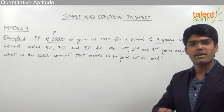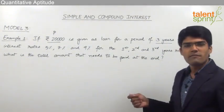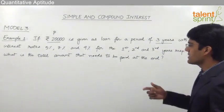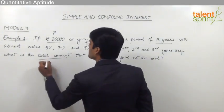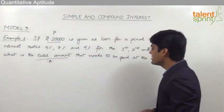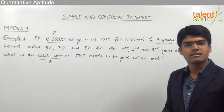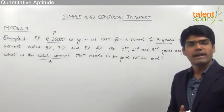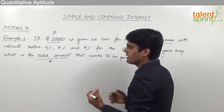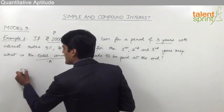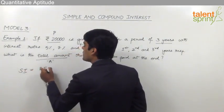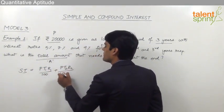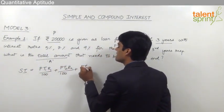The interest rate is not constant — first year we pay 5%, second year 7%, and third year 9%. We need to find the total amount A. Total amount is principal plus interest, and the principal is 20,000. Going by the formula, simple interest can be calculated as P·T1·R1/100 + P·T2·R2/100 + P·T3·R3/100.